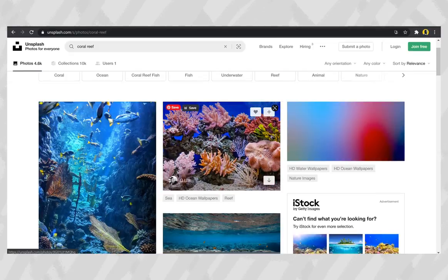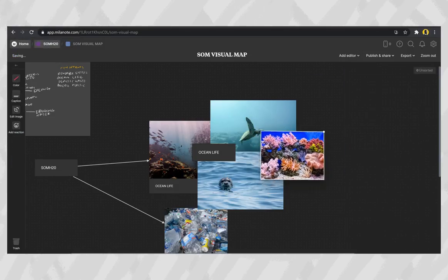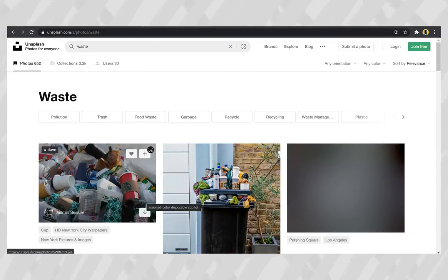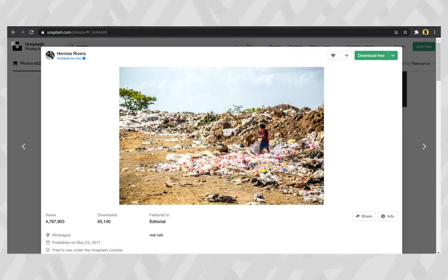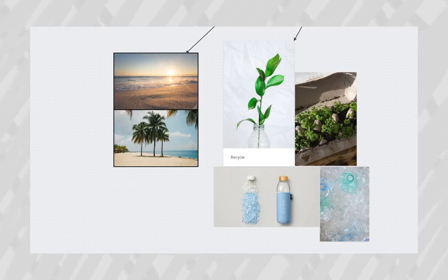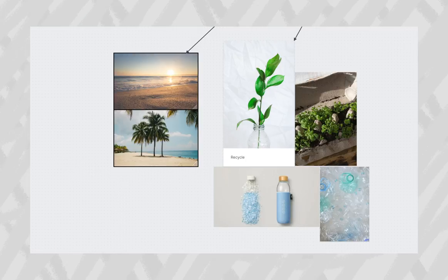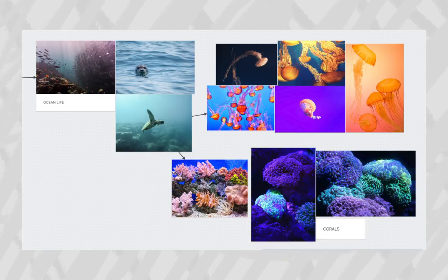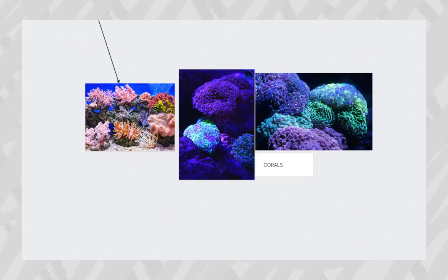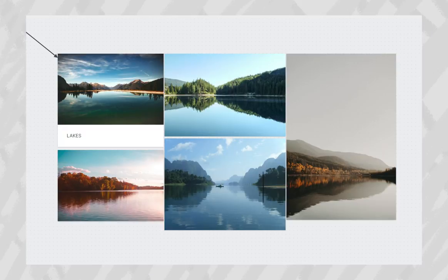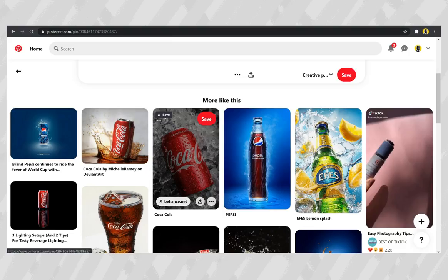The next thing I did was what I like to call a visual mind map — it's like a version of the mind map with images, which sparks ideas even more clearly. Notes on plastic waste and the beach inspired the idea of the product being on the beach with tiny plastic elements around it. Images of underwater life like corals and jellyfish inspired the idea of the product being underwater with colorful air bubbles. Another idea was the product resting on top of illuminating corals. Images of lakes and oceans inspired putting the product on top of a lake.